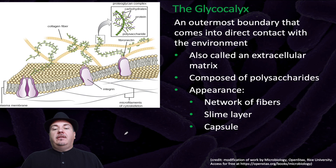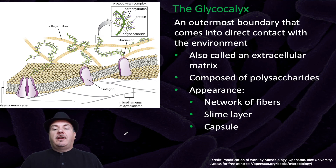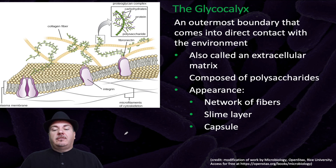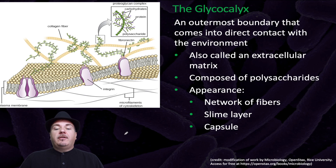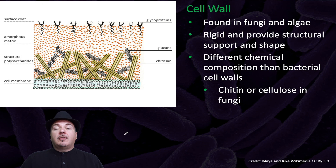We have the glycocalyx, which is the outermost boundary that comes into direct contact with the environment. It's also called an extracellular matrix. It's composed of polysaccharides, and its appearance is a network of fibers, slime layer, or capsule.